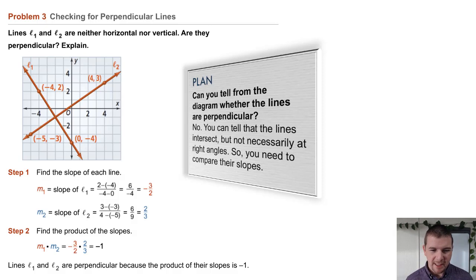Problem 3: Checking for perpendicular lines. Lines L1 and L2 are neither horizontal nor vertical. Are they perpendicular? Explain.